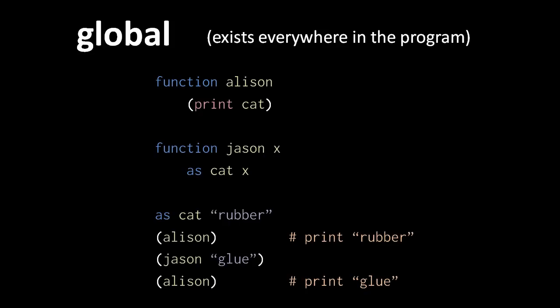Anyway, when we call json with a string glue as argument, that string gets assigned to the parameter x, and so gets assigned to the global variable cat. So when we subsequently invoke allison again, it prints the current value of cat, which is now the string glue.